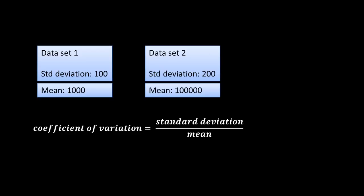The beauty of this is that the coefficient of variation has no units, because the standard deviation (numerator) has dollars as units and the mean (denominator) also has dollars as units. When you divide, it becomes a dimensionless number. Therefore it is possible to compare the coefficient of variation of highly dissimilar datasets — for example, heights versus weights — which you cannot do unless you standardize by taking the coefficient of variation.